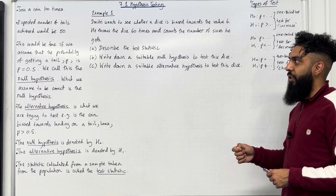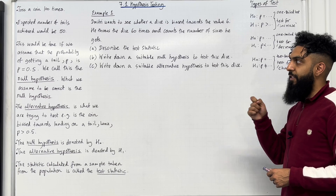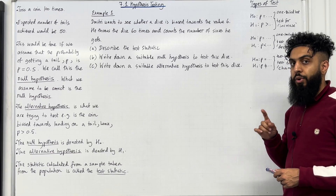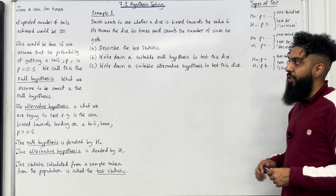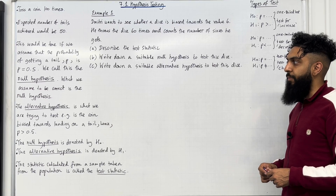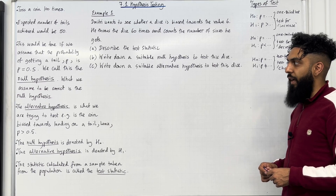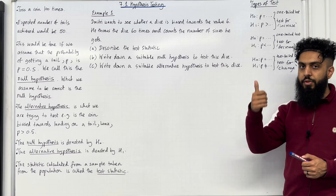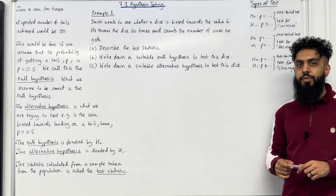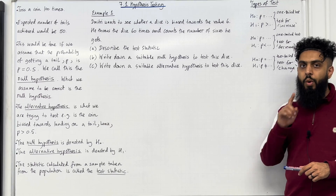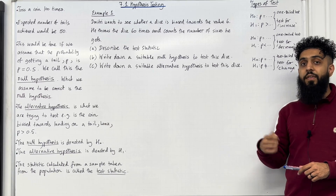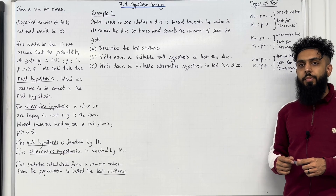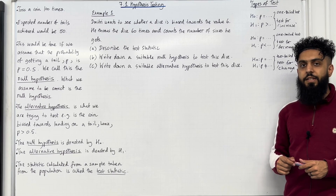Suppose I toss a coin 100 times. The expected number of tails achieved would be 50. This would be true if we assume that the probability of getting a tail P is 0.5. If we toss a coin 100 times and P equals 0.5, then 100 times 0.5 gives us the expected number of tails — so 100 times 0.5 is 50 tails.